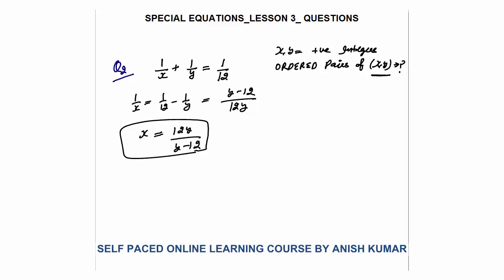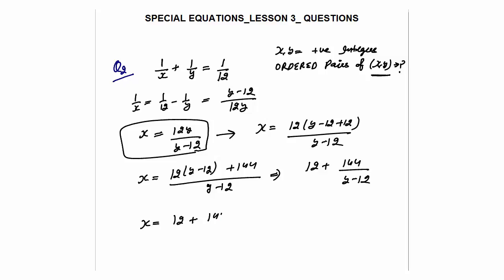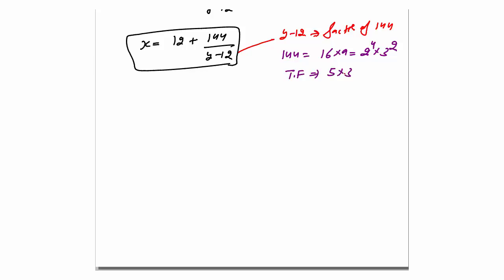These questions can be solved in under 2 minutes. Making y − 12 appear in the numerator: x = [12(y − 12) + 144] / (y − 12), which simplifies to x = 12 + 144/(y − 12). Since 144 = 2⁴ × 3², the total number of factors is (4+1)(2+1) = 15.